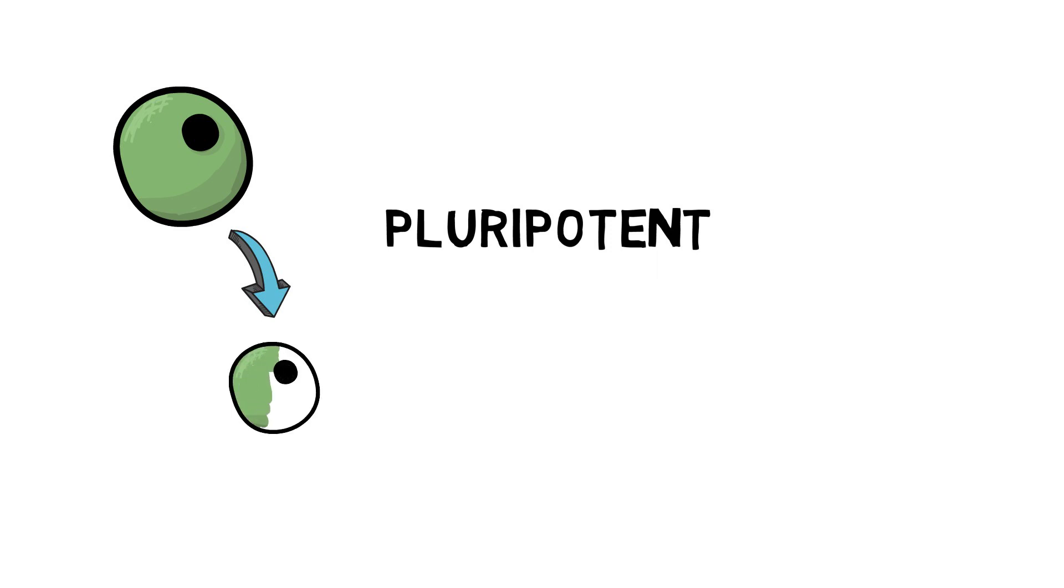Now pluripotent stem cells are also a pretty important type of stem cell. While they're not quite as powerful as totipotent stem cells, they still have several different potential differentiations they could become. They can basically become nearly every cell type, but they cannot form the placenta and supporting tissues needed to support a fetus and therefore are unable to generate a new organism on their own.